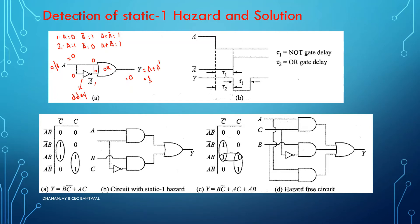Static 1 hazard normally occurs in a circuit which has OR gates, where you expect output to be 1 regardless of input. But due to the time delay of the NOT gate, the output — instead of remaining 1 — becomes 0 for some time duration. You can see in the timing diagram there is a time delay between A and A-bar. During this particular time duration, input to the OR gate will remain 0.